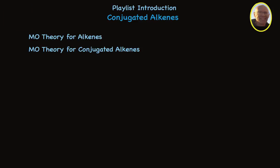The lectures in this playlist describe some special properties and chemistry of conjugated alkenes — compounds that have at least two double bonds linked by a single bond. Three lectures are devoted to the application of the molecular orbital theory of bonding to alkenes and conjugated alkenes, and even allylic systems — allylic cations and radicals — and explain why they're so stable.